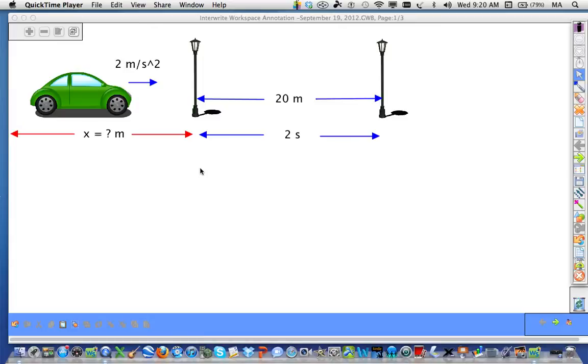A car starting at rest, undergoing uniform acceleration from an unknown distance to the left of these two lampposts pictured in the diagram. However, the car does travel the distance between the two lampposts, 20 meters apart, in a span of two seconds. This is not an easy problem, so follow along. It's going to take a couple of steps.